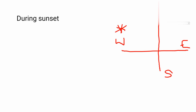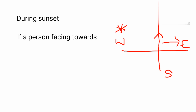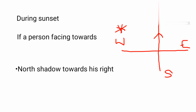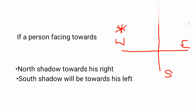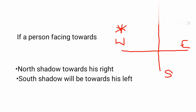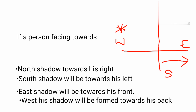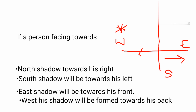During sunset, the sun sets in the west, so the shadow will always be formed towards the east. Suppose a person is facing north — his shadow will be formed towards the east, that is towards his right. If he is facing south, his shadow will be formed towards his left. If he is facing east, his shadow will be formed in front of him. And if he is facing west, his shadow will be formed towards his back.